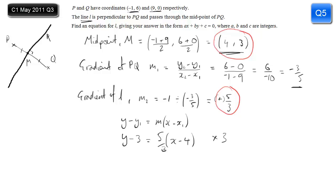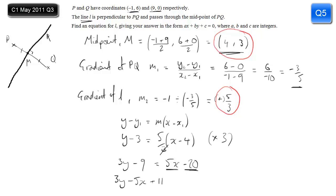I can't stop there because the answer is required in the form Ax plus By plus C equals 0, where A, B, and C are integers. So I multiply everything by 3: 3y minus 9 equals 5 times x minus 4, which expands to 5x minus 20. Gathering x and y terms and the constant all on the left: 3y minus 5x, and minus 9 plus 20 is plus 11. So 3y minus 5x plus 11 equals 0. That's my equation.